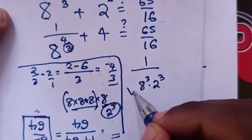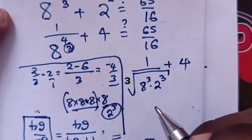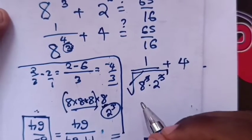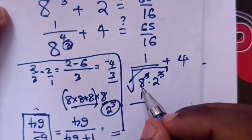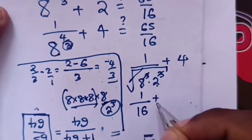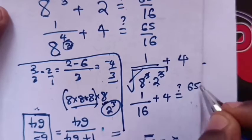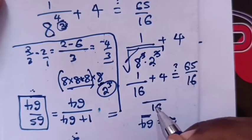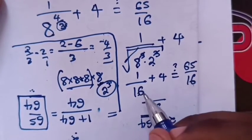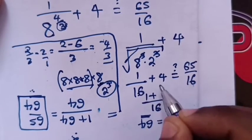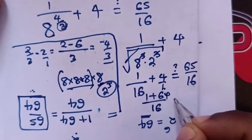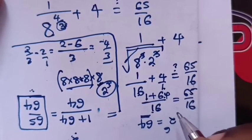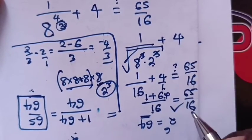The cube root cancels with the cube, giving 8 × 2 = 16. So 8^(-4/3) = 1/16. Therefore 1/16 + 4 = 1/16 + 64/16 = 65/16, which equals 65/16. This is true — the answer is correct.